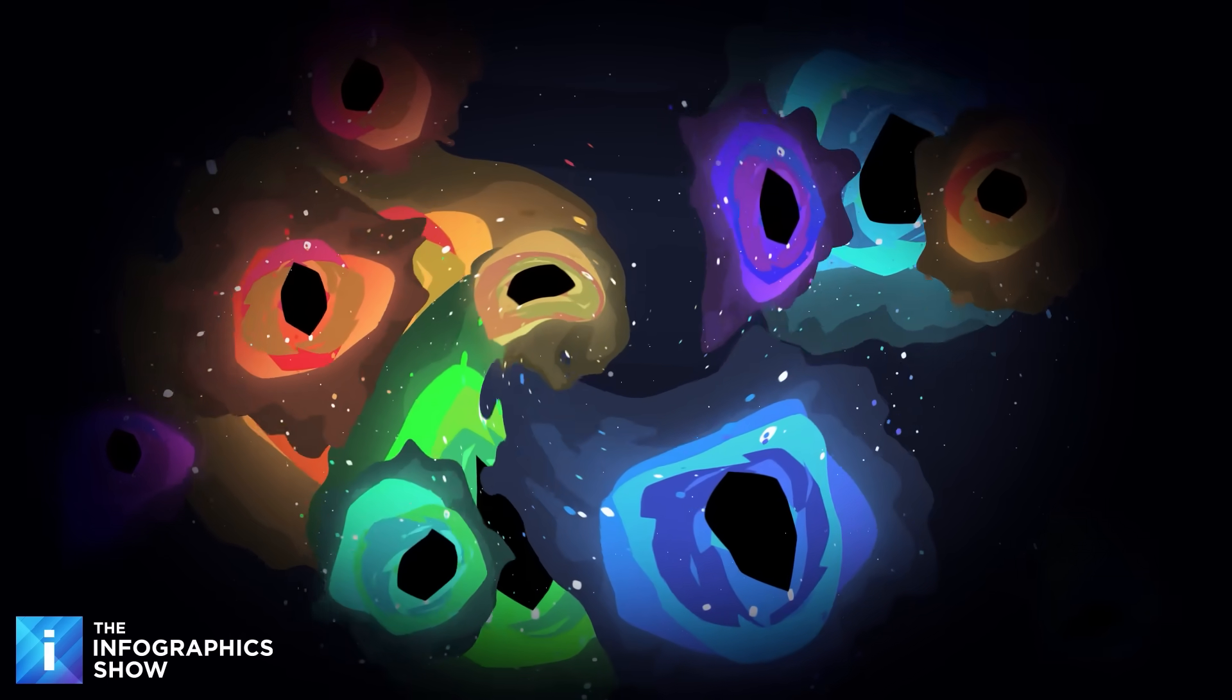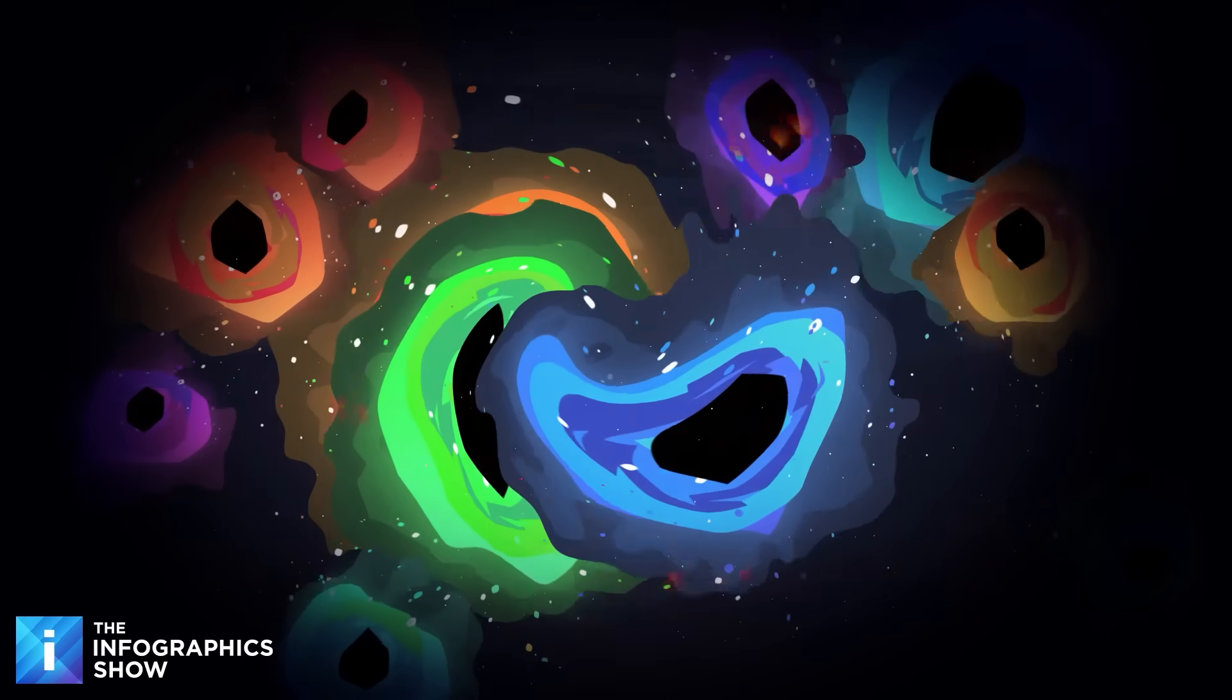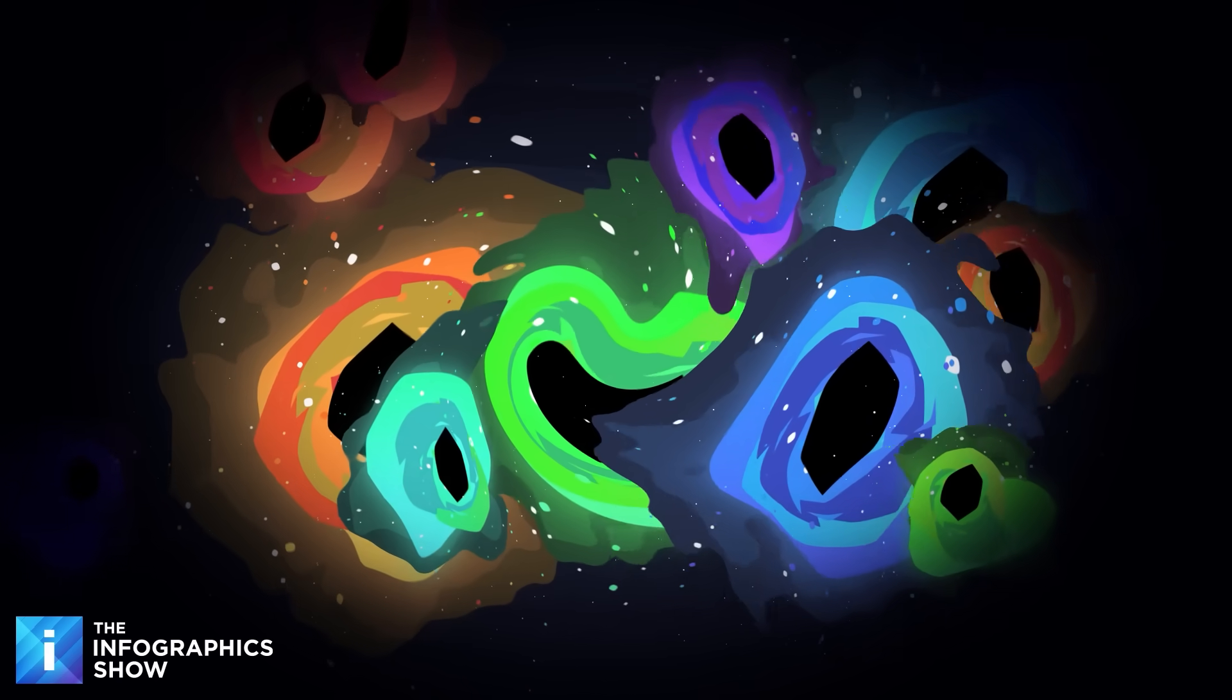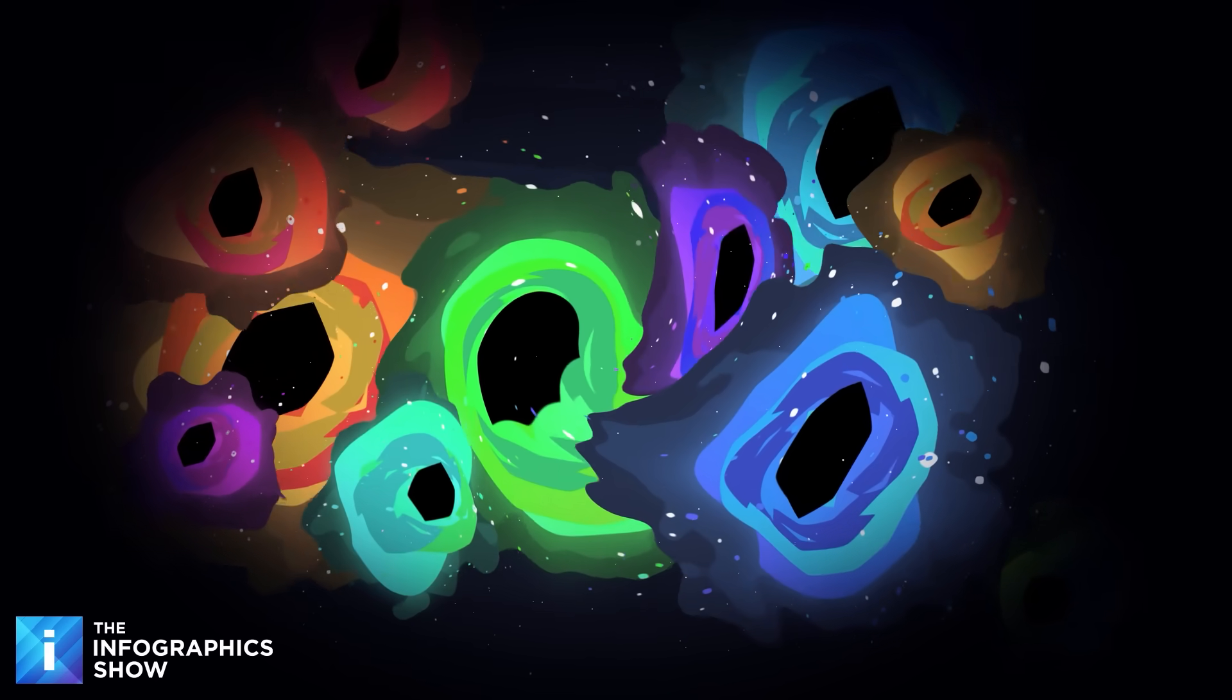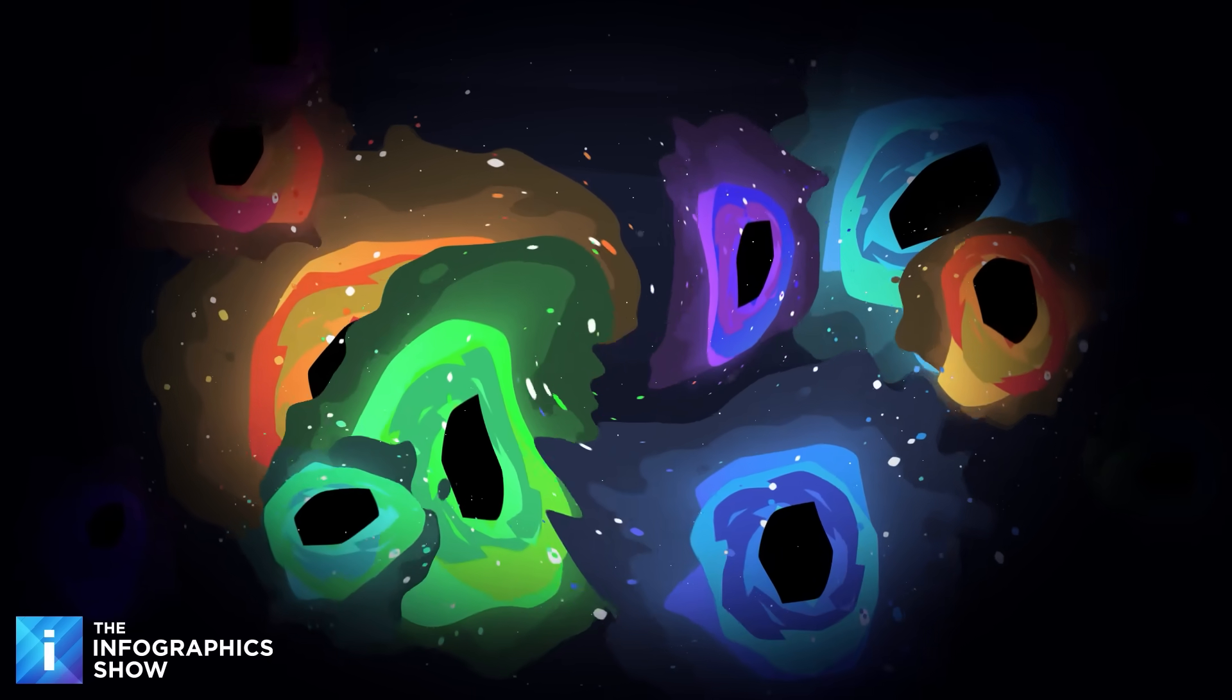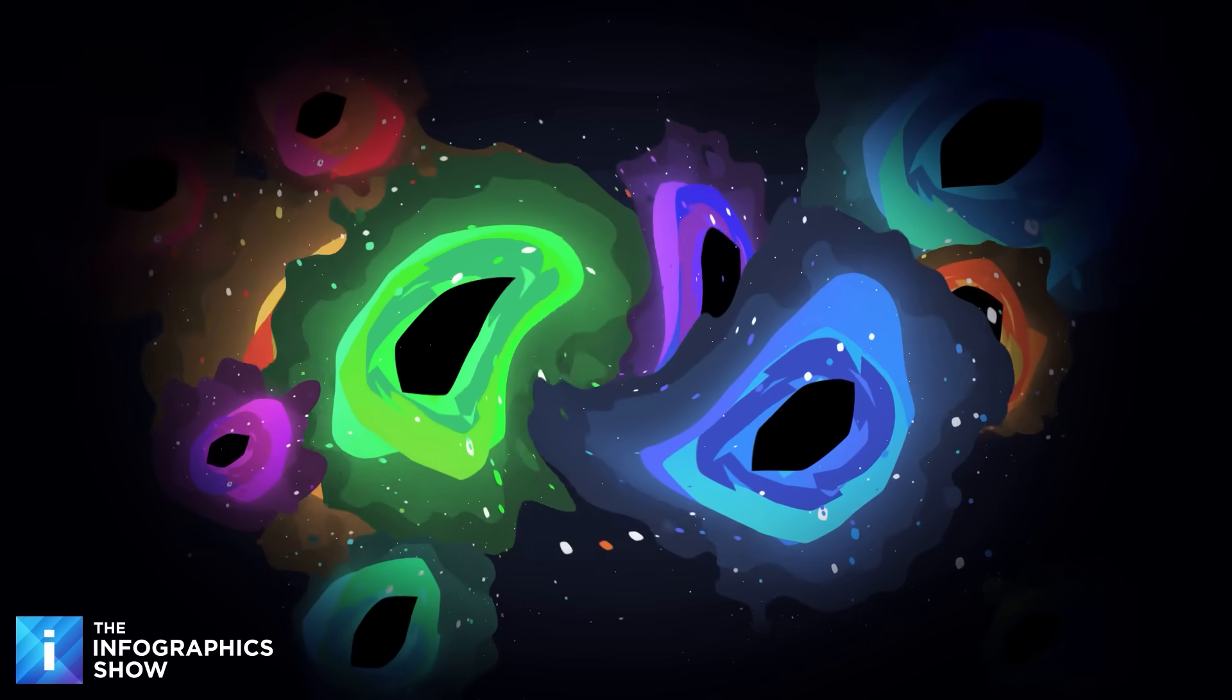Just as there is a hierarchy of black holes, there would be a hierarchy of survivors. The smallest black holes, those with just a few solar masses, would be the first to disappear, going out in spectacular bursts of energy. The stellar mass black holes would follow over timescales that make the current age of the universe seem like a fleeting moment.